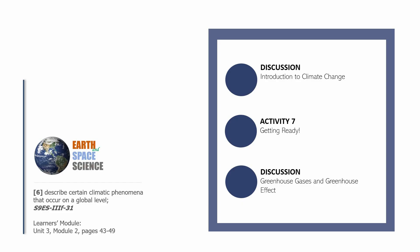Welcome to the ninth session of Earth and Space Science. This is Sir CJ and we are now working on the sixth learning competency for this grade level. For this grade level's third quarter Earth and Space Science, the sixth learning competency is: describe certain climatic phenomena that occur on a global level. If you want to follow through with your learner's module, you can open it in Unit 3, Module 2, pages 43 to 49.